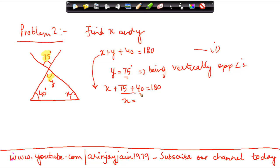So 75 plus 40 gives me 115. So x is equal to 180 minus 115, is equal to 65 degree. So x comes to 65 degree, y comes to 75 degree.